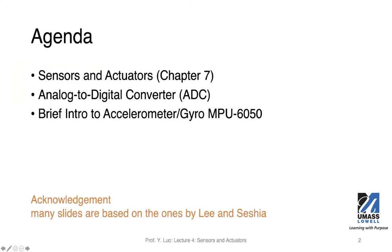We're going to talk about a few things. First, a set of slides regarding the sensors and the actuators. I will then talk about ADC, Analog to Digital Converter. And at the end, I will briefly introduce the accelerometer and gyro chapter we're going to use in the next lab.